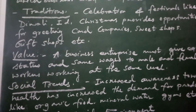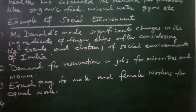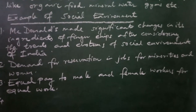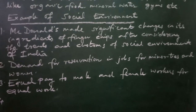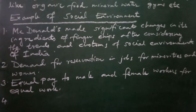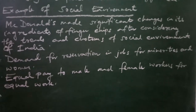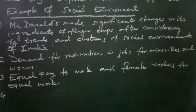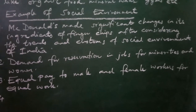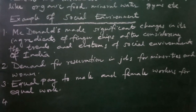Let us consider some more examples. First, McDonald's made significant changes in its ingredients of finger chips after considering the trends and customs of the social environment of India. Second, demand for reservation in jobs for minorities and women. And third, equal wages to male and female workers employed in the same type of work. These are examples of social environment and they have a greater impact on business.